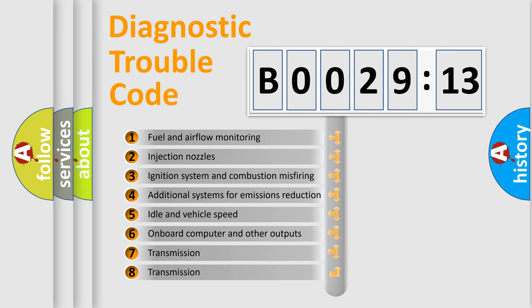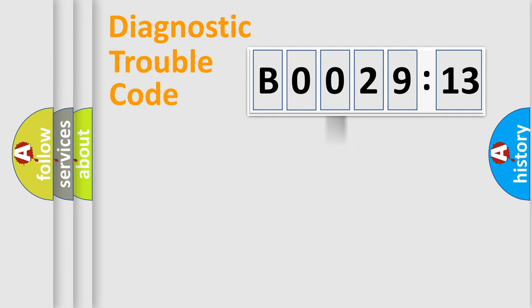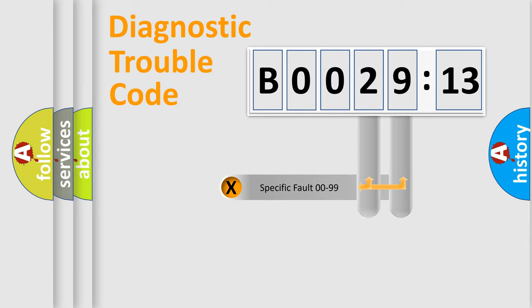The third character specifies a subset of errors. The distribution shown is valid only for the standardized DTC code. Only the last two characters define the specific fault of the group.